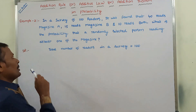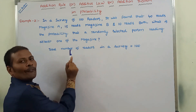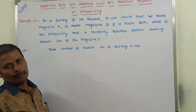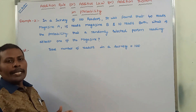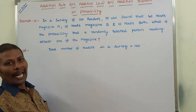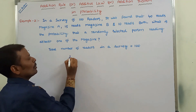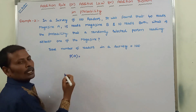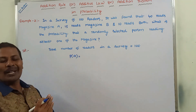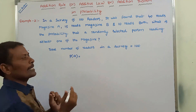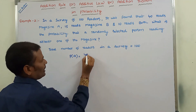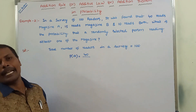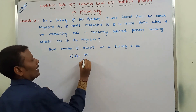The solution: the total number of readers in the survey is 100. The probability of reading magazine A, P(A), equals the number of persons reading magazine A — that is 40 — divided by the total number of readers in the survey, that is 100.